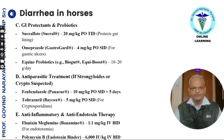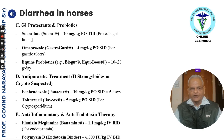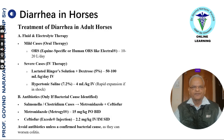If parasites are suspected — such as strongyles or Cryptosporidium — use fenbendazole 10 mg per kg for 5 days, or toltrazuril 5 mg per kg for Cryptosporidium. For anti-inflammatory therapy, use flunixin meglumine 1.1 mg per kg. Polymyxin B as an endotoxin binder at 6,000 international units per kg IV twice a day is suggested.